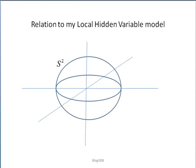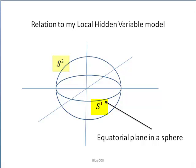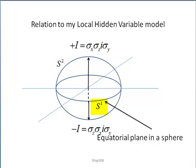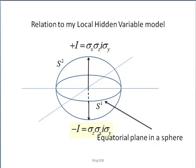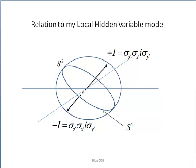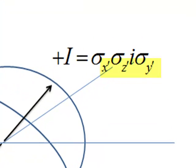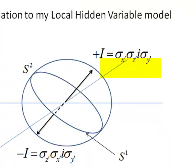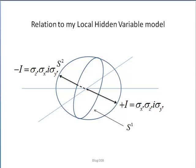To see the connection to my local hidden variable theory, let us start with the two-sphere, as Christian did. We see the equatorial planes, which are one-spheres S1. Now the unit trivectors of Christian define the two-spin values as we have seen, but this can point in any direction on that sphere. Here is another orientation and another equatorial plane — note that xyz are different, so they have primes on them.